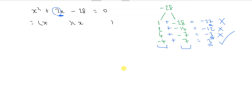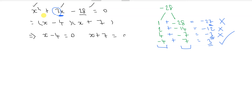So we have x minus 4 times x plus 7. Minus 4 times 7 is minus 28 — good. And minus 4x plus 7x equals 3x — good. Now x minus 4 equals 0 and x plus 7 equals 0. Adding 4 to both sides gives x equals 4, and subtracting 7 gives x equals minus 7.